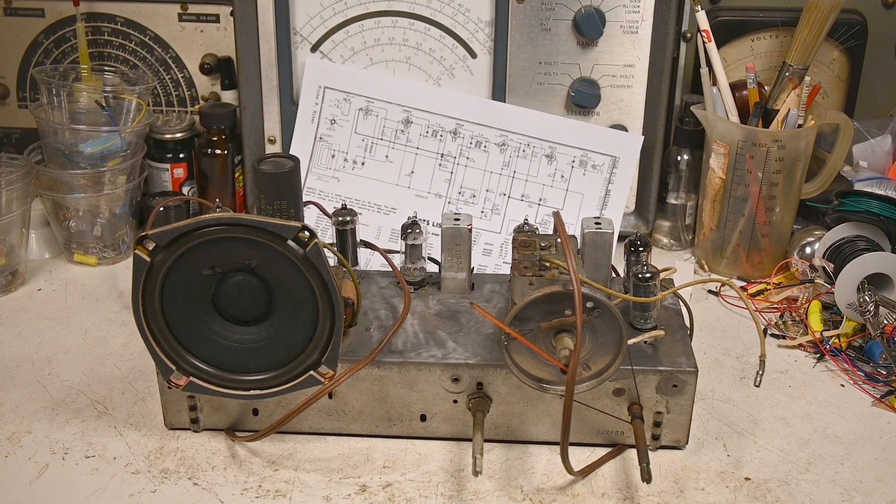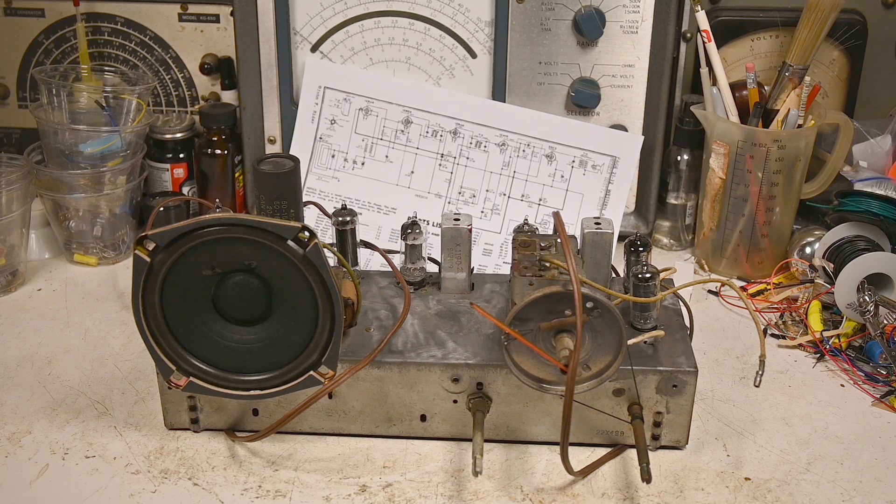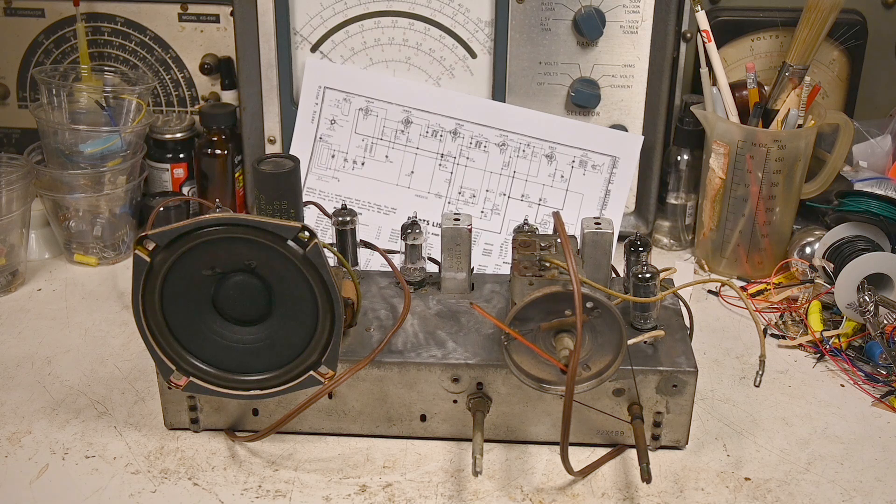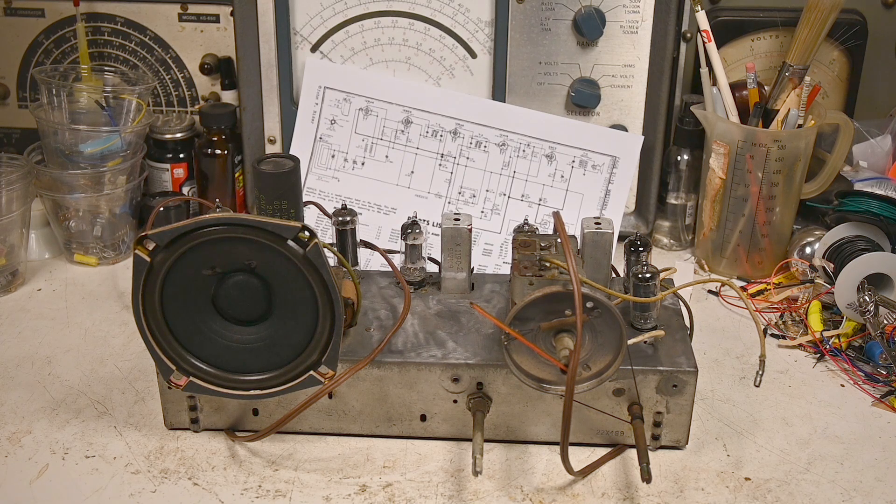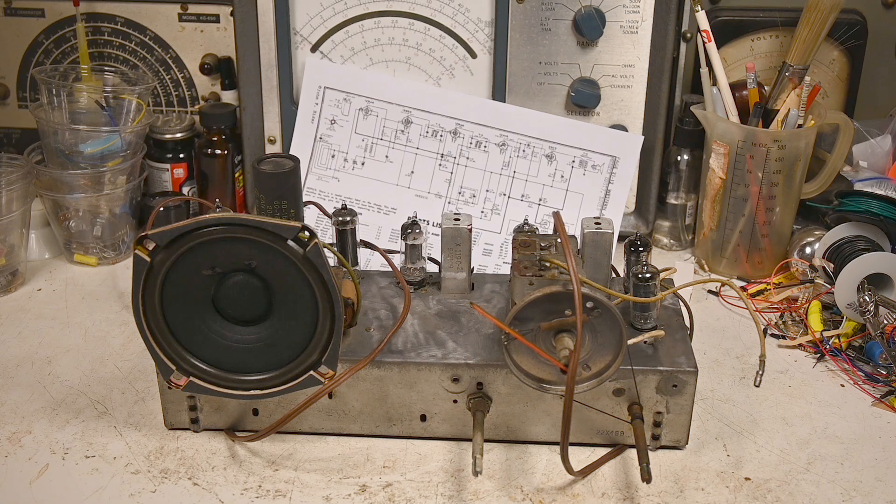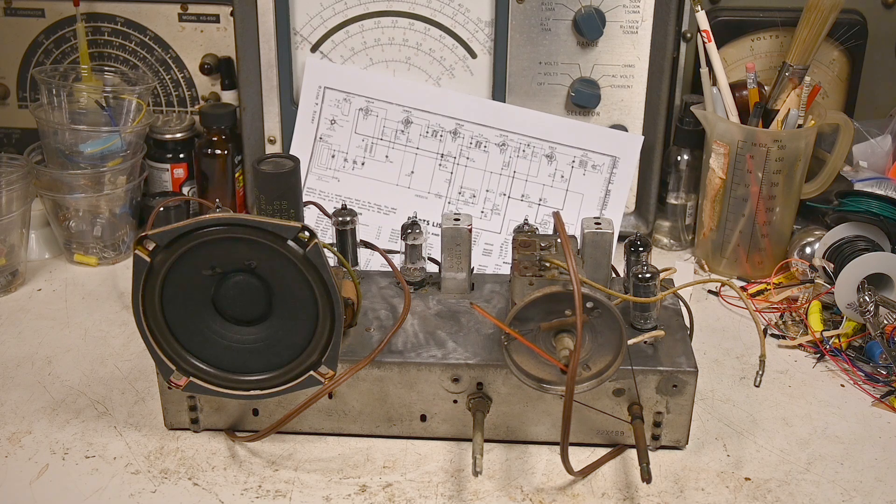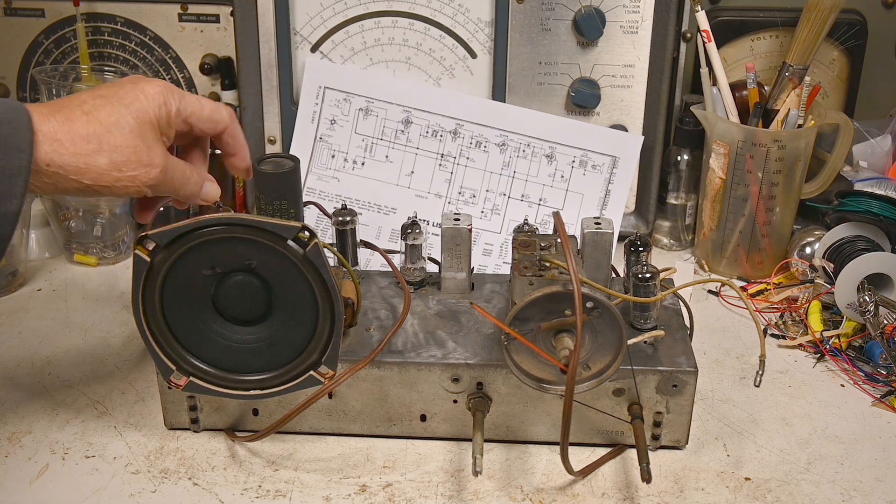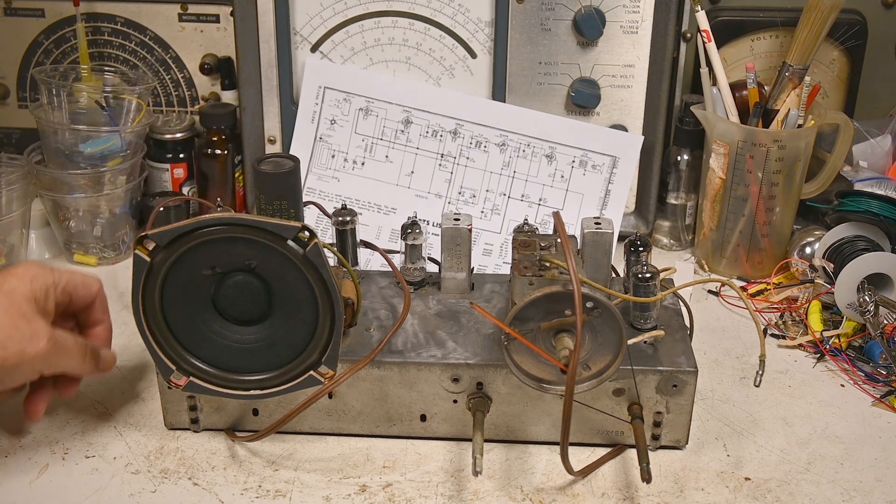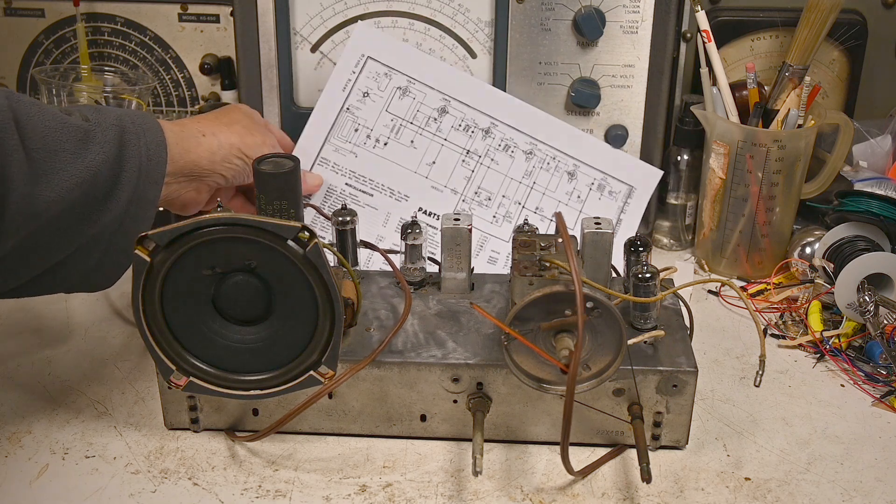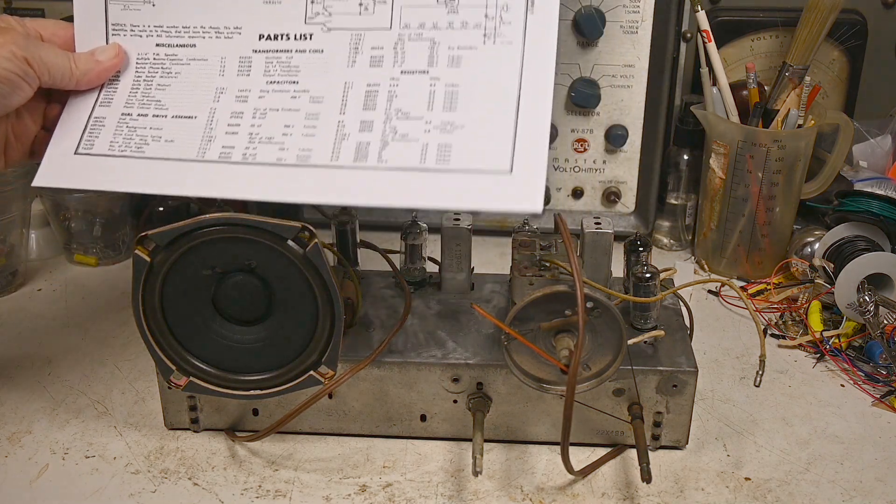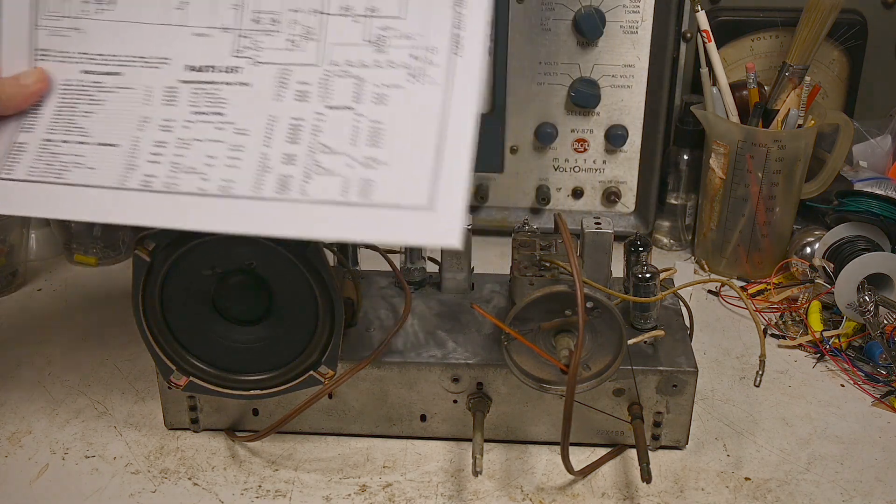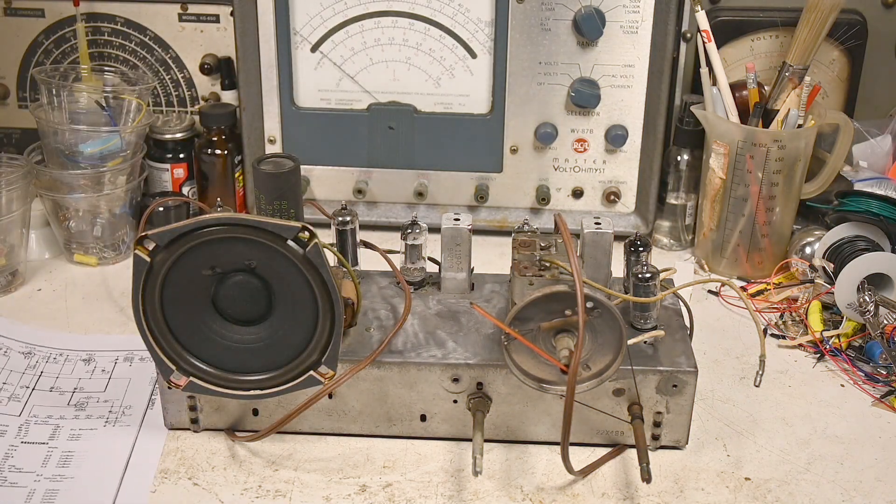I got this chassis from a friend who's been having difficulty with it drawing too much current. The last time he was looking at it, it actually burned out the 35W4 rectifier tube. So I got the wiring diagram out and he asked me to take a look at this.